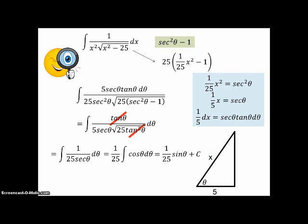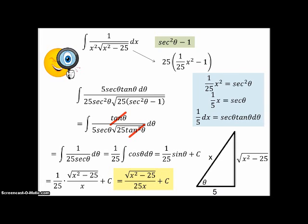Secant is x over 5, hypotenuse over adjacent, use the Pythagorean theorem. And looky there. That looks familiar, huh? So sine then is just opposite over hypotenuse. And so it's the square root of x² minus 25 over x plus c. And that's basically all we can do.